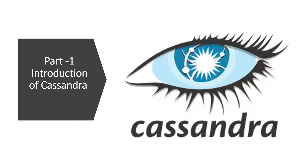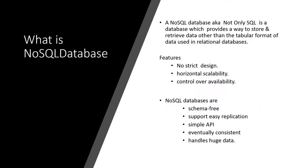As of today, Cassandra is a NoSQL open-source column-based database and it's been very popular. NoSQL database is also known as 'Not Only SQL' database. It provides a way to store and retrieve data differently compared to RDBMS, where data is stored in columns and rows. A key feature of NoSQL databases like Cassandra is that there is no strict schema design.